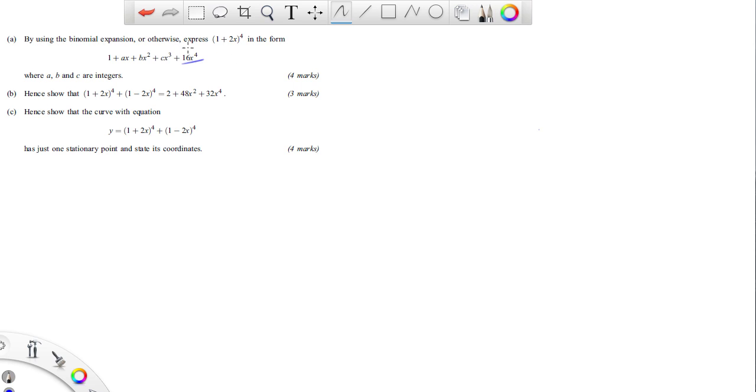Now, by using binomial expansion, or otherwise, express this in the form here. So we don't want to just multiply this all out, because that's not really going to help us. If we just try and multiply this all out, it's actually going to take more time than using binomial expansion. But for four marks on a timed exam, we don't want to risk that. So we're going to use binomial expansion.